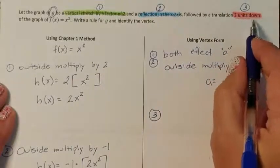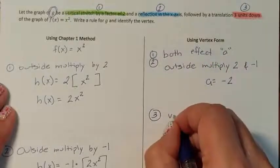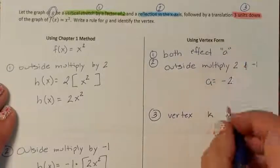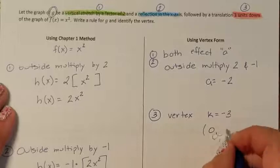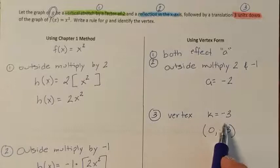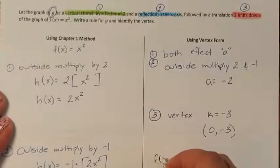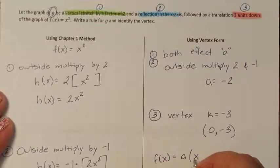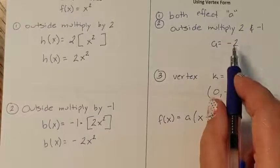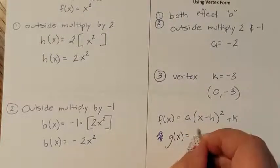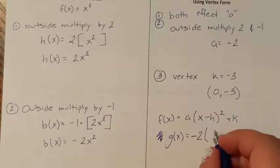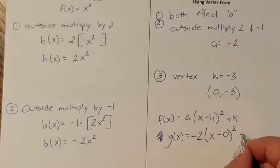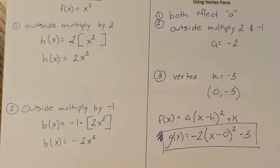Step 3 is just a move down. Moving down affects our vertex's k value, and down 3 means k = negative 3. So my vertex is (0, −3) because I went down 3 but had no left/right movement. I have a, k, and h, so I can write vertex form: g(x) = a(x − h)² + k. My a is negative 2, no right or left moves, and I went down 3, so g(x) = −2x² − 3. This is the exact same answer as the Chapter 1 method.